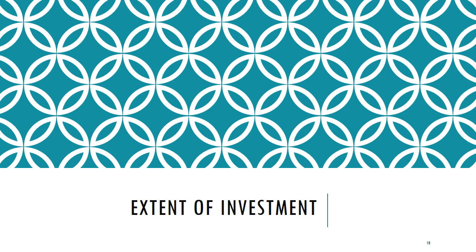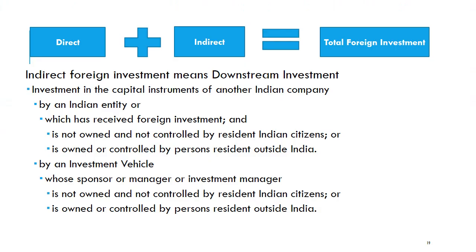The extent of investment under FDI regulations: total foreign investment equals direct plus indirect investment. The sectoral caps or limits given under the FDI policy or FEMA regulations for every sector represent the limit on total foreign investment, meaning the direct as well as indirect investment combined cannot breach the limit provided for that sector.